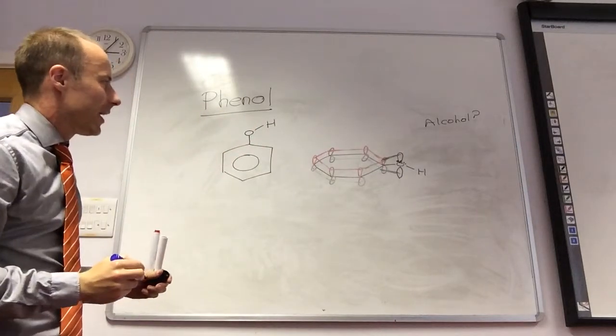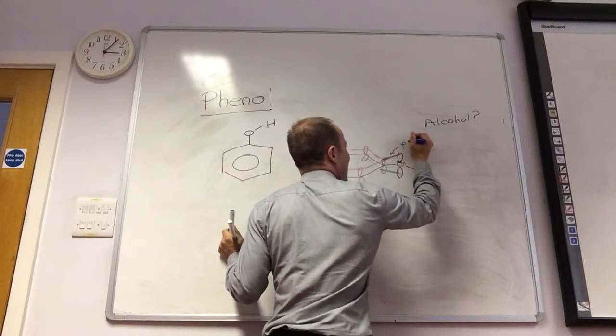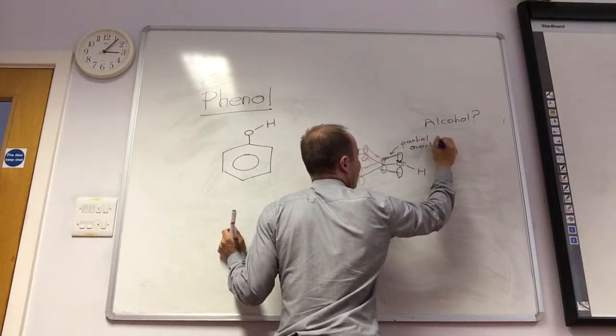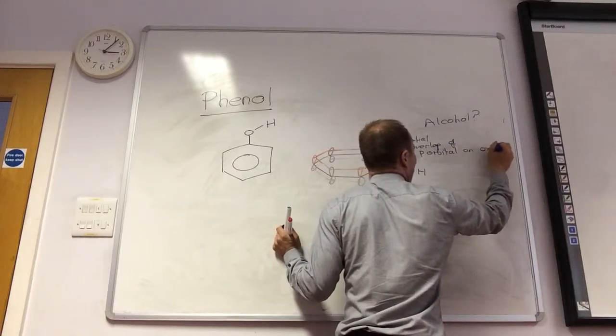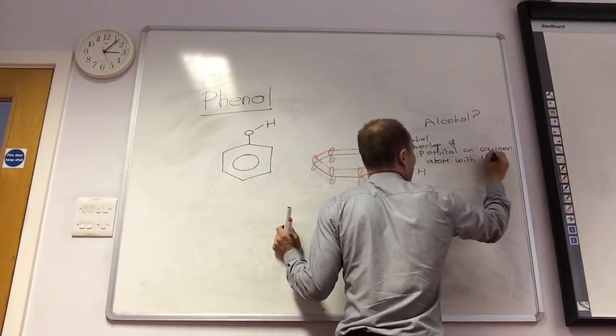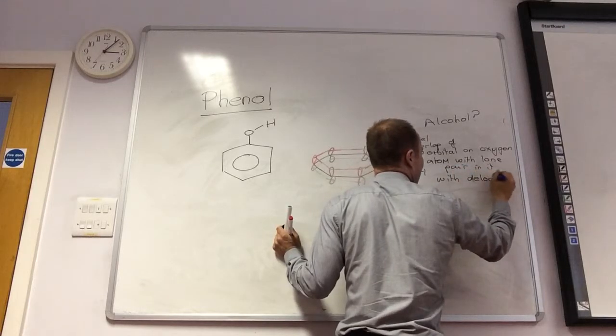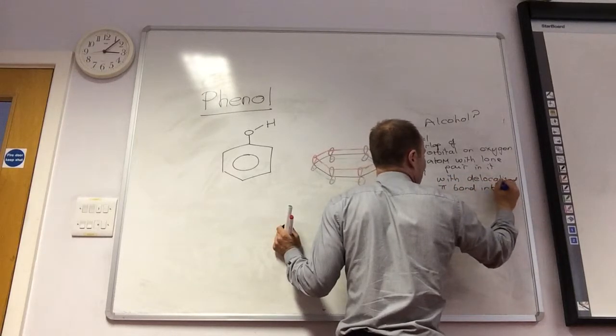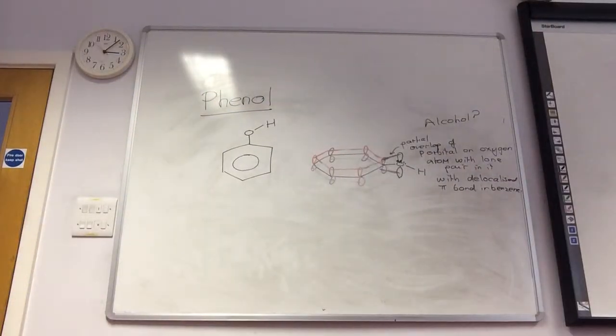Like so. They can all line up nicely, and they can overlap. Should we draw a pipe on the line as well? Yeah, for a P, and we can say that we have a partial overlap of P orbital on oxygen and with lone pair in it will delocalize it.